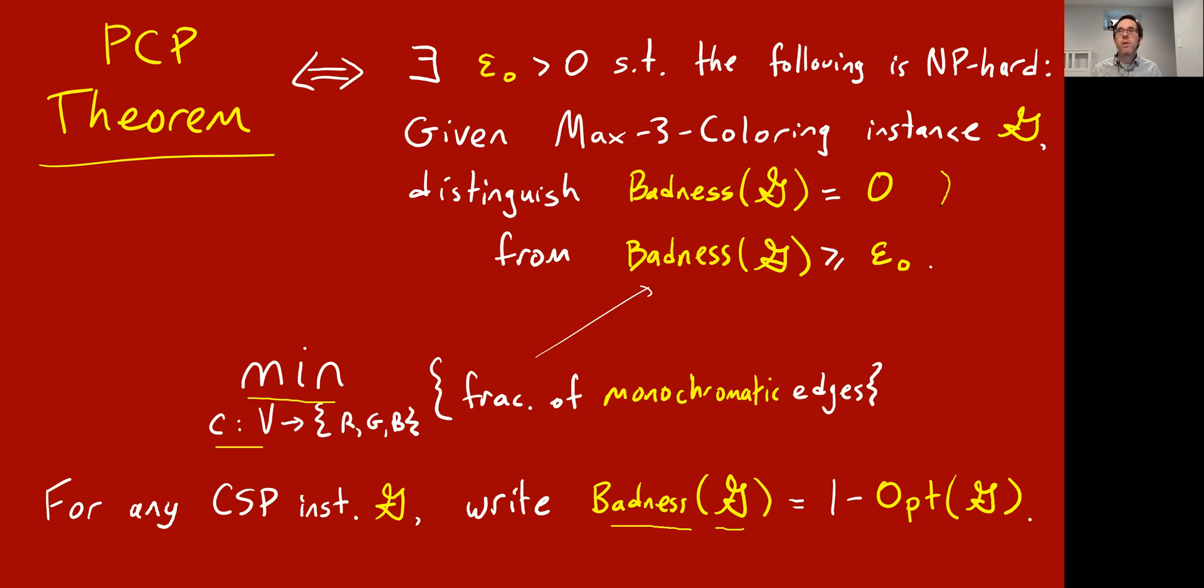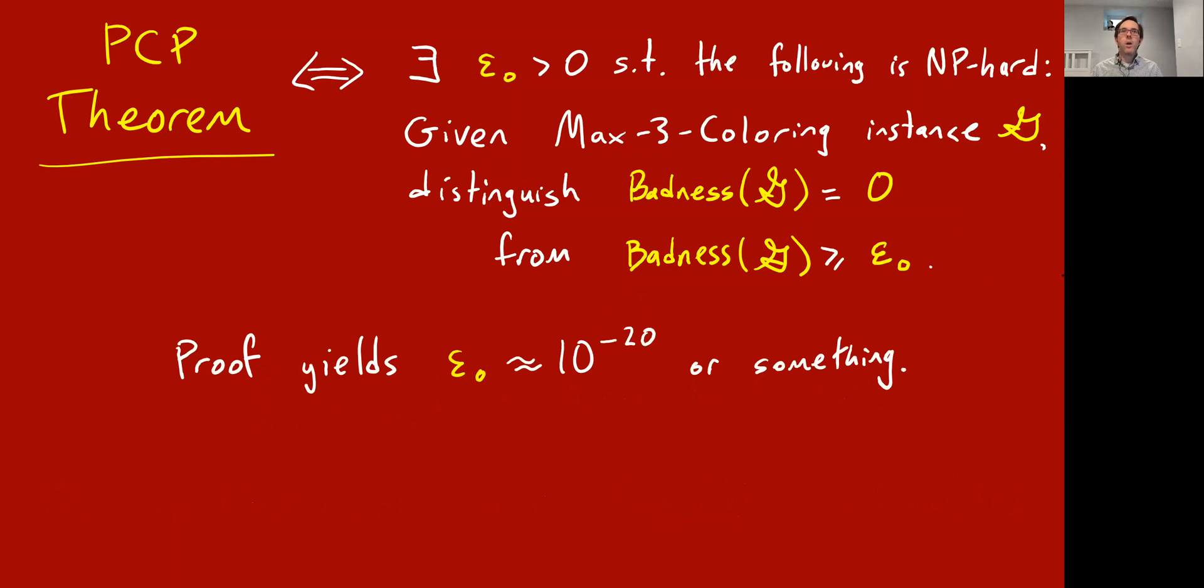In the context of three-coloring, or max-three-coloring, if I give you a graph G, what is its badness? It's just the minimum over all three-colorings of the vertices of the fraction of monochromatic edges. These are the violated edges in the three-coloring CSP. I'm just changing the notation up here, saying that what's hard to distinguish, and be hard to distinguish under the PCP theorem, is the case where you're given a graph where the badness is zero, meaning there is a perfect three-coloring, versus the badness is at least epsilon zero, like one percent, meaning every three-coloring of the vertices has to monochromally color an epsilon zero fraction or more of edges.